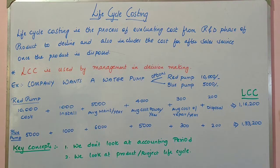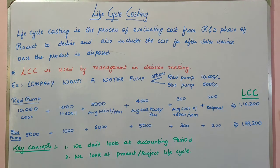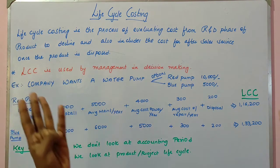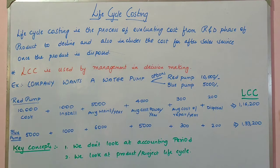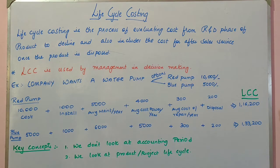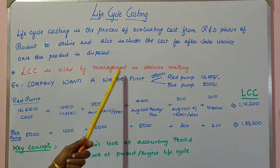For example, an Apple product is invented, it runs in the market, and one day it is removed from the market. After removal, you have to provide certain after-sales service, and a cost is involved. So in life cycle costing, after-sales service cost is also included. Life cycle costing finds the cost of the product from the R&D phase till ultimate disposal, including the cost for after-sales service. This is mainly used by management in decision making — to fix a selling price or to make make-or-buy decisions.